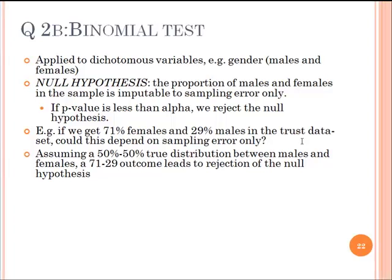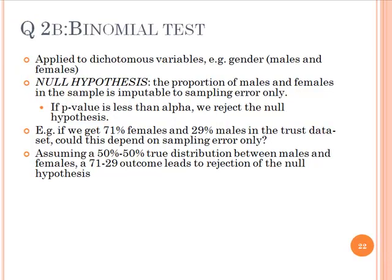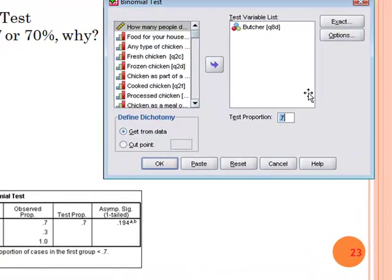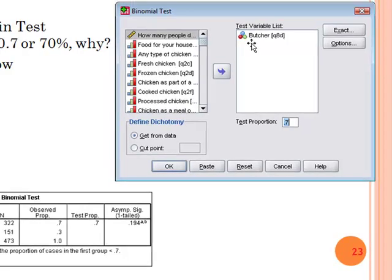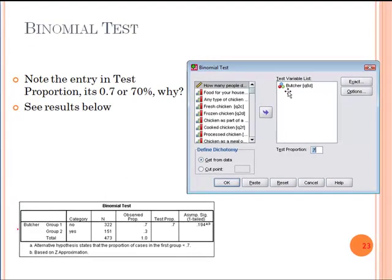We use the binomial test and you get this dialog for the binomial test. The question was to test the butcher shop - we're testing the assumption that about 30% of consumers shop at butcher shops. This is the binomial test using question 8D. I select butcher here and I select 0.7 here.